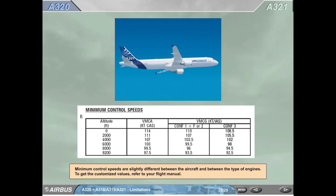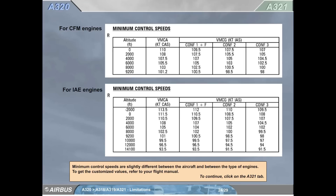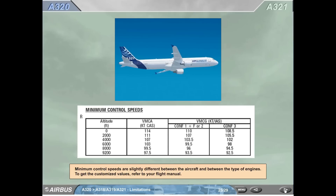A321. Minimum control speed. Minimum control speeds are slightly different between the aircraft and between the type of engines. To get the customized values, refer to your flight manual. For CFM engines, minimum control speed as follows. For IAE engines, minimum control speed as follows. Minimum control speeds are slightly different between the aircraft and between the type of engines. To get the customized values, refer to your flight manual.